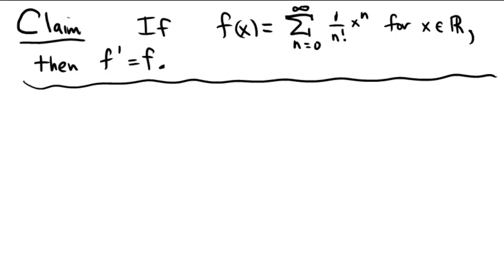Without using the fact that we know what this function is, let's just approach it as it's asking here. We'll start with a proof. f of x equals the sum from n equals 0 to infinity of 1 over n factorial x to the n for any x in the real numbers.